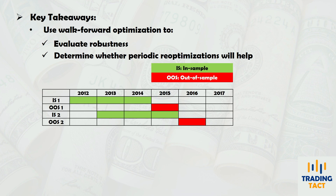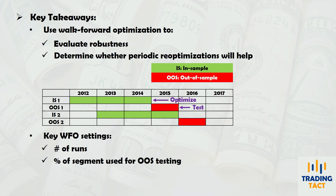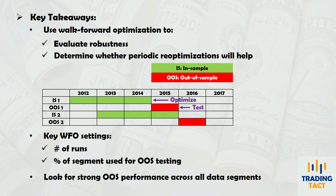The process involves breaking down your data into numerous segments, each containing an in-sample and out-of-sample portion. For each segment, strategy optimizations are conducted over the in-sample portion, after which the optimal parameters are applied to the out-of-sample portion. Two important settings are the number of runs and the percentage of each data segment used for out-of-sample testing. Be sure to select settings aligned with your strategy's premise. A robust strategy should consistently demonstrate strong out-of-sample performance across data segments, and ideally across a broad range of walk-forward settings as well. If you want to run walk-forward optimizations, StrategyQuant can help — check out its free 14-day trial in the description.